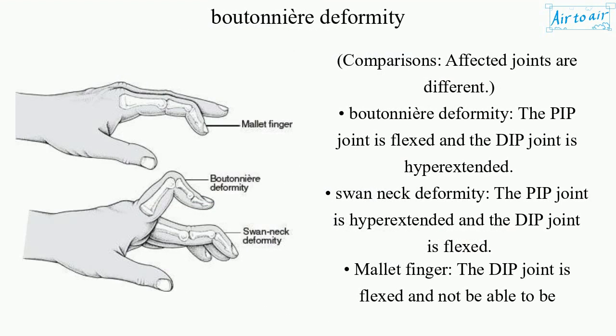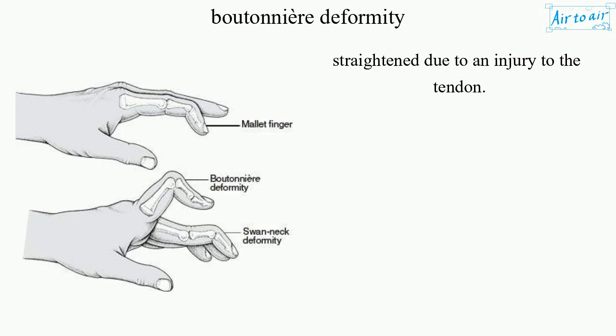Comparisons — affected joints differ between conditions. Boutonnière deformity: the PIP joint is flexed and the DIP joint is hyperextended. Swan neck deformity: the PIP joint is hyperextended and the DIP joint is flexed. Mallet finger: the DIP joint is flexed and cannot be straightened due to an injury to the tendon.